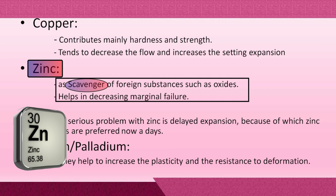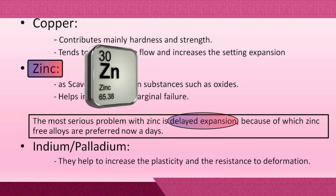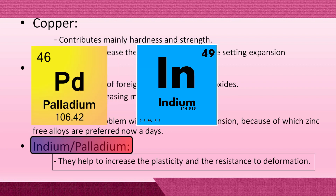During manufacturing, all constituents — copper, silver, tin, palladium, and zinc — are melted at high temperature. This melting causes oxidation of the metals, which can change the properties of the alloy. Zinc acts as a scavenger and prevents oxidation of the other metals by rapidly reacting with oxygen, forming zinc oxide, which can be easily removed. One disadvantage of zinc-containing alloy is that if it gets contaminated with moisture or saliva, delayed expansion will occur, which is very painful for the patient; delayed expansion occurs after three to five days. Indium and palladium help increase plasticity and resistance to deformation.